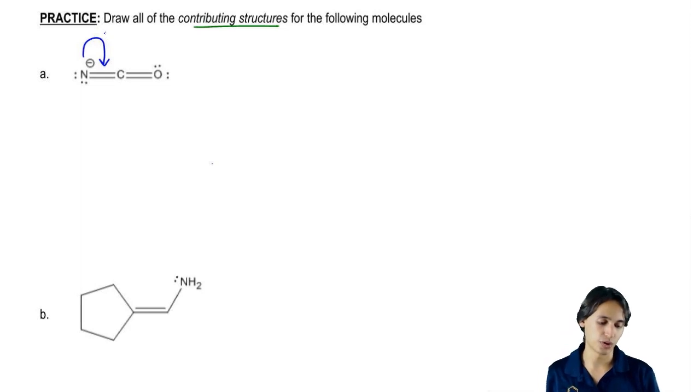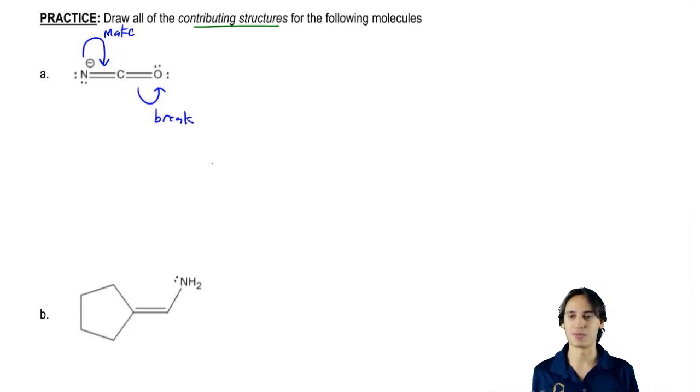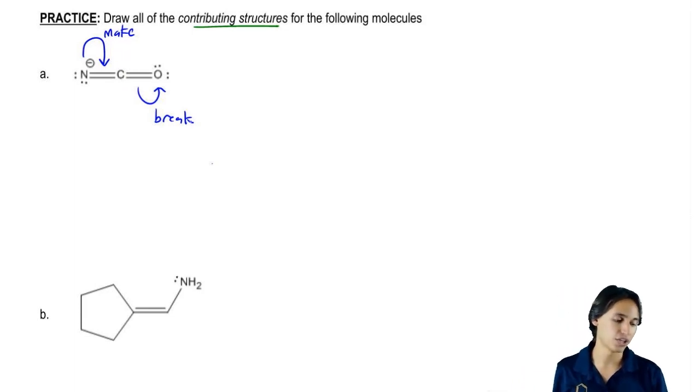So if I make that bond, what do I have to do? Do you guys remember? I have to break a bond. Why did I draw it at the bottom? You could have drawn it at the top too. But if you make a bond, you have to break a bond. And this is that pattern that I told you guys that anions come with two arrows.